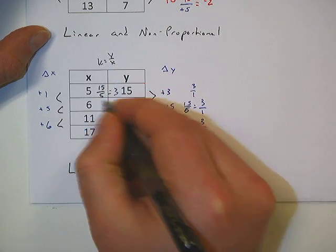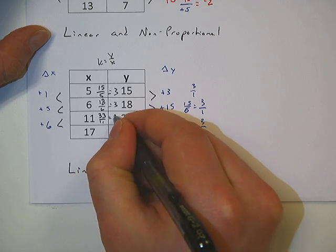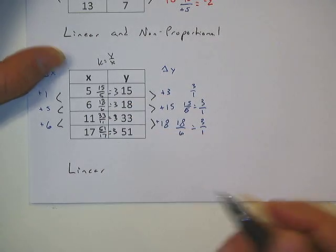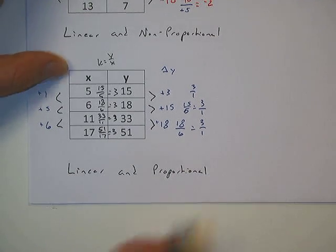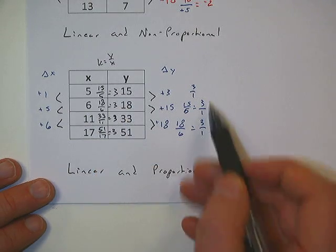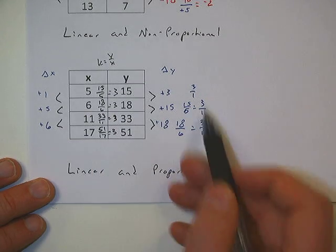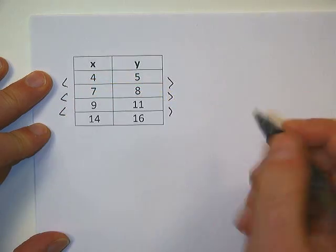Let's do our k value. k equals y over x. So 15 over 5 equals 3. 18 over 6 equals 3. 33 over 11 equals 3. And 51 over 17 equals 3. So they're all the same, which means linear and proportional. Now on the two examples we've done so far that are linear and proportional, you may notice that the rate of change and the constant of proportionality are the same. Anytime you have a problem that's linear and proportional, the constant of proportionality and the rate of change will be equal to one another. Now let's do one more example just to make sure we have it down.